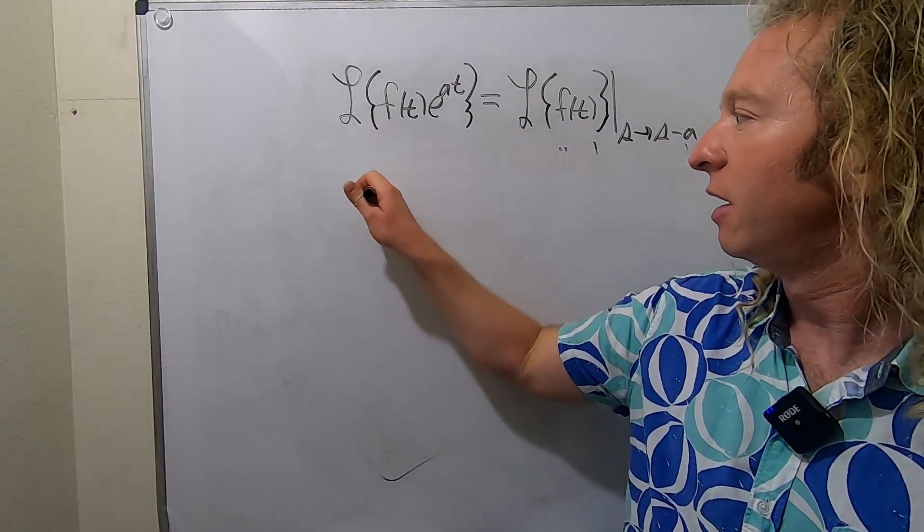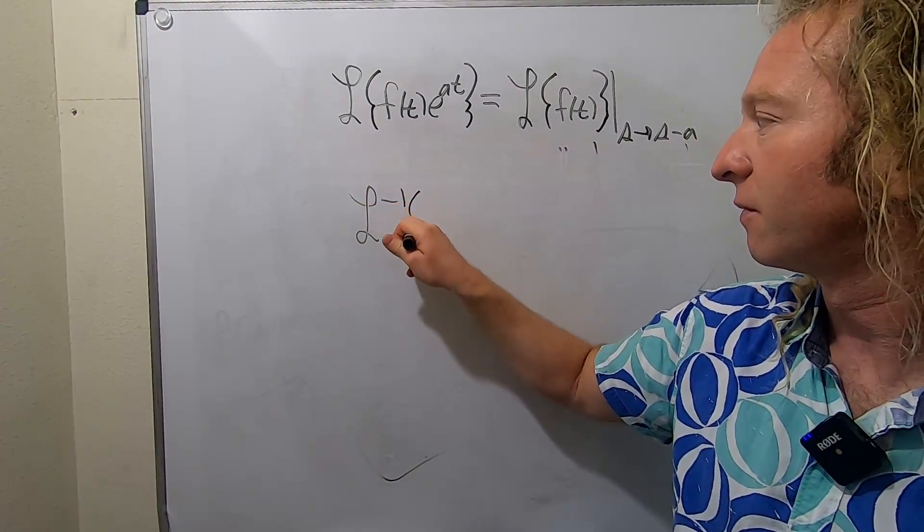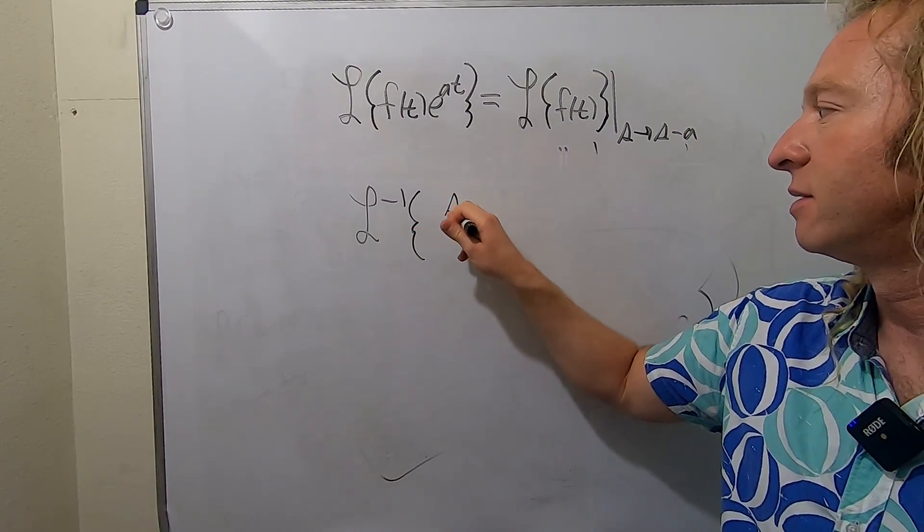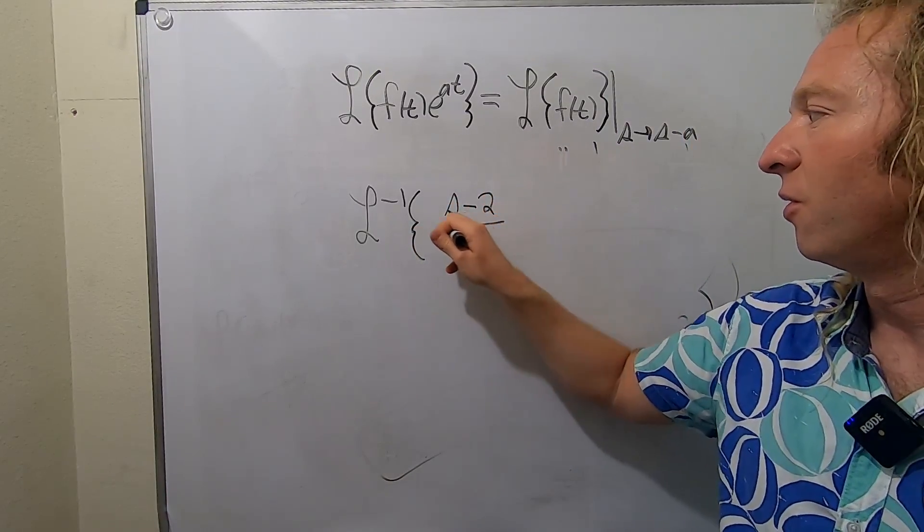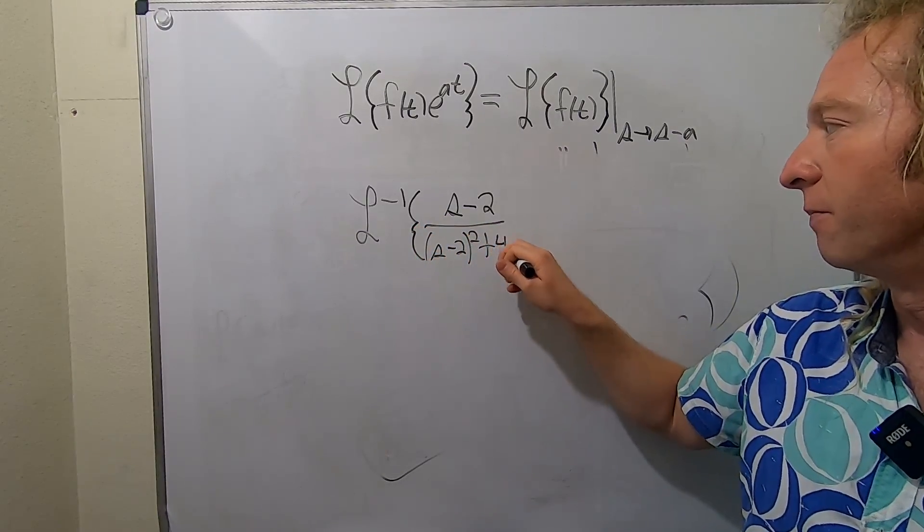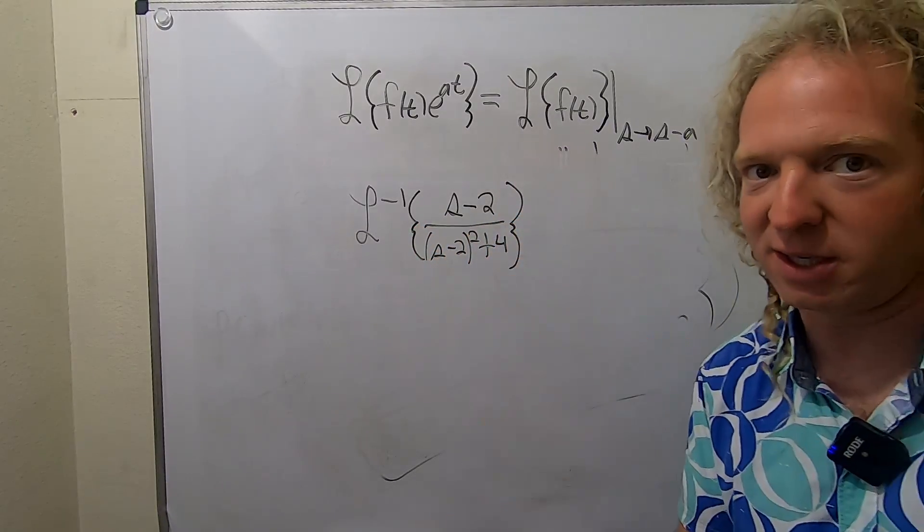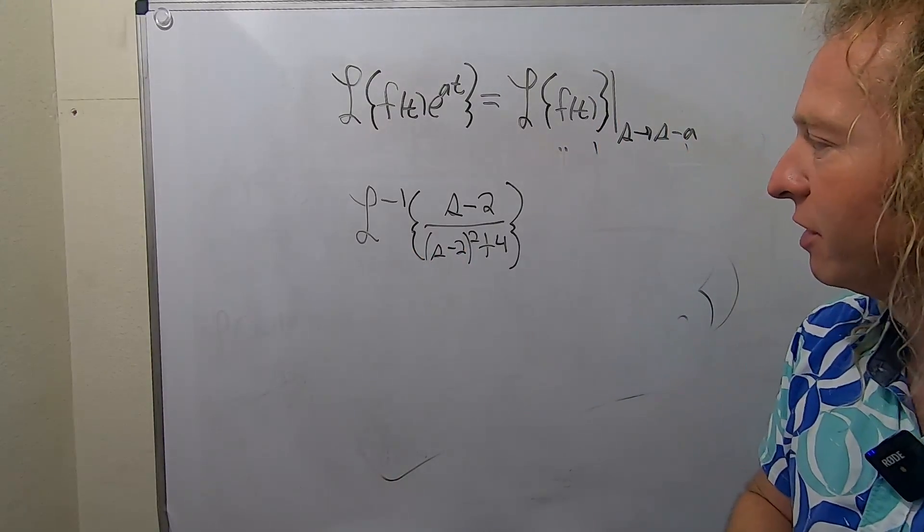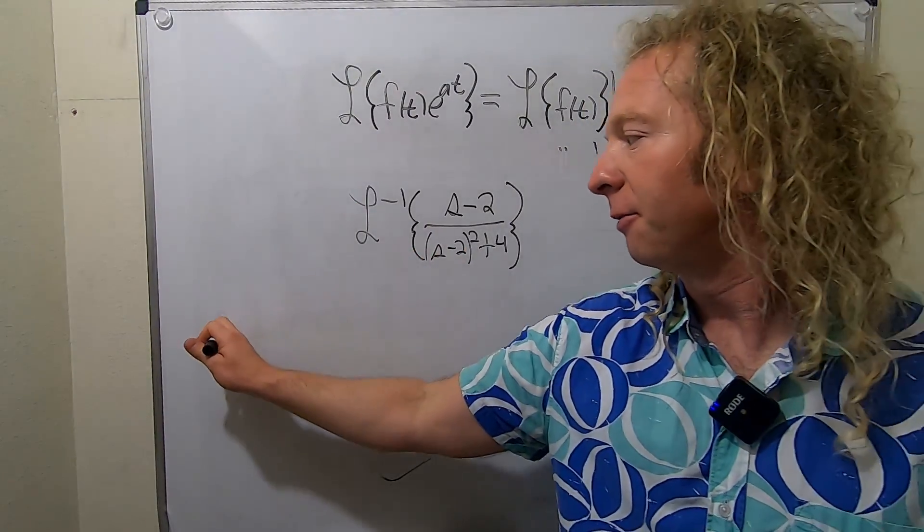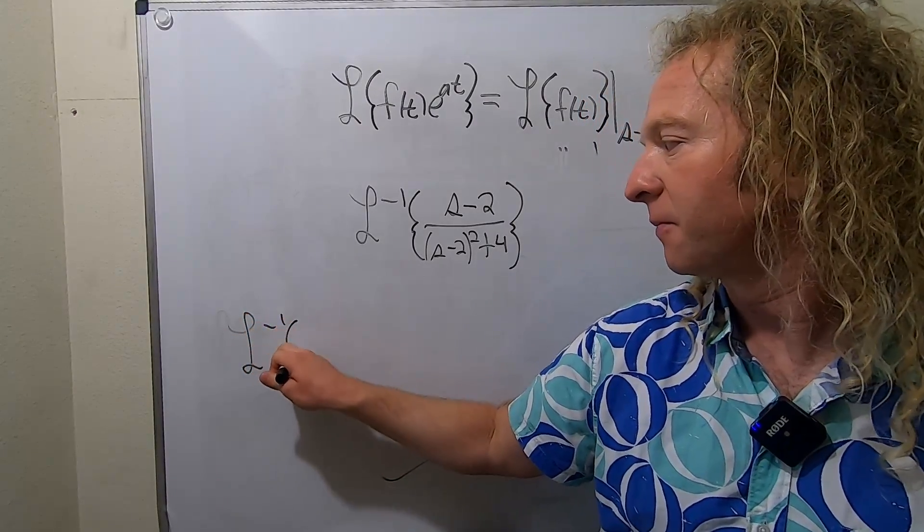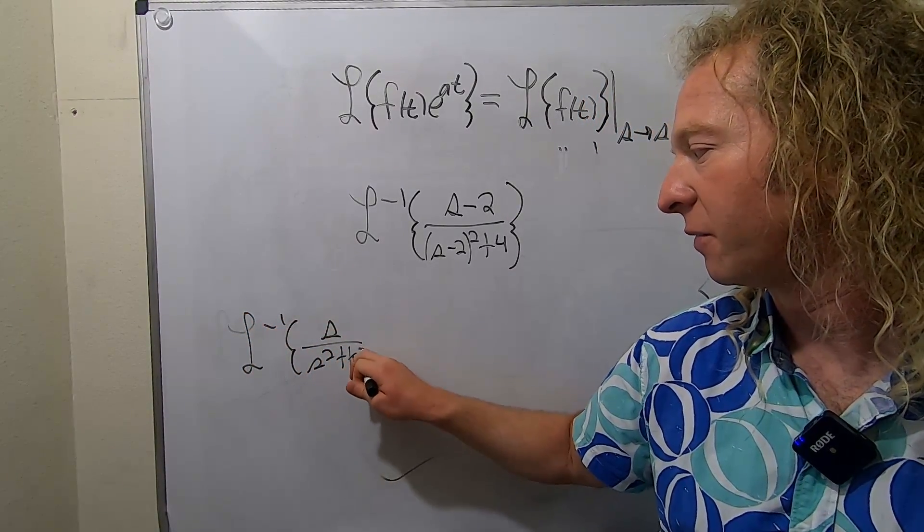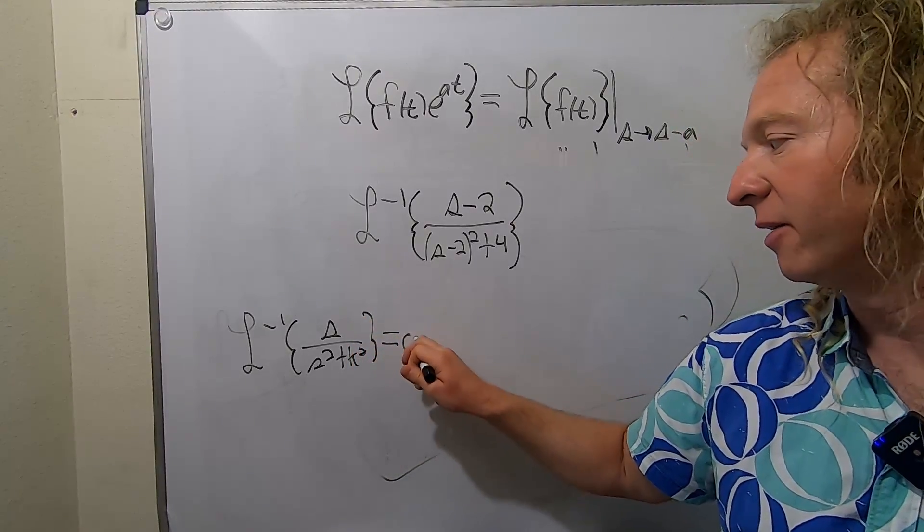How about something like this, inverse Laplace of, let's say we have s minus 2 over s minus 2 squared plus 4. Totally rigged to work out to make it easy, but it's a good example nevertheless. So this should remind you of cosine. Remember, if you have the inverse Laplace of s over s squared plus k squared, you get the cosine of kt.